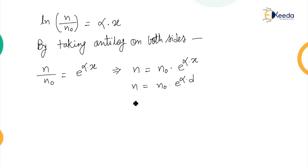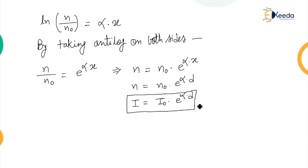Representing the number of electrons in terms of current, we get I = I₀·e^(αd). This is called the current growth equation due to primary ionization. It means when the primary ionization process is complete, we get increasing current, and that current increases exponentially. This is verified from the derivation that the increase in current between the electrodes is exponential, also explained graphically by the current-voltage graph. That's all for the current growth equation in presence of primary ionization process. Thank you.